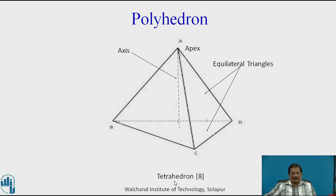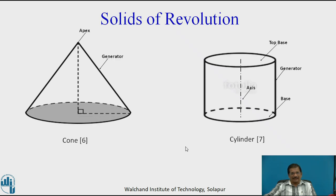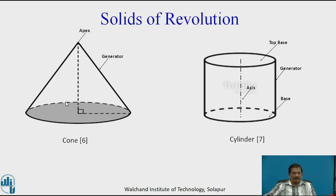Now in solids of revolution, there are two types: cone and cylinder. In case of a cone, the base will be a circle. From the center of the circle, draw a perpendicular line equal to the axis length to get the apex, then draw tangents from the apex to the given circle — that is known as a cone. The top view or front view will be a circle, depending upon where it is situated. Similarly, for a cylinder, there will be two parallel circles to each other in different planes, and draw tangents to them — this is called a cylinder.